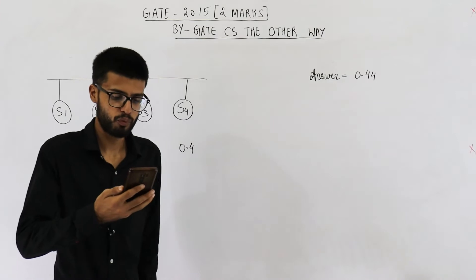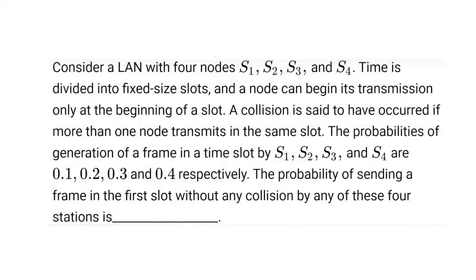They are saying consider a LAN with four nodes S1, S2, S3, and S4. Time is divided into fixed size slots and a node can begin its transmission only at the beginning of a slot. A collision is said to have occurred if more than one node transmits in the same slot.